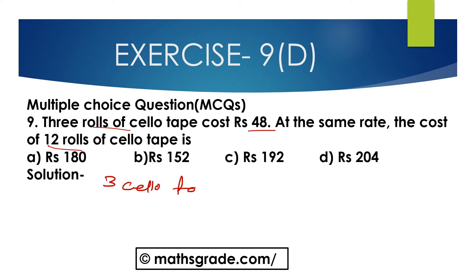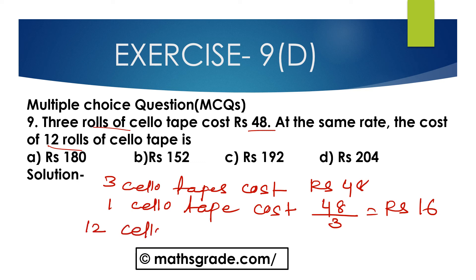3 cello tapes cost 48 rupees. So, 1 cello tape will cost 48 divided by 3, which is equal to 16 rupees. Now, at the same rate, the cost of 12 rolls of cello tape is 12 cello tapes multiplied by 16 rupees.